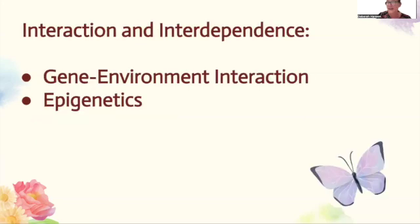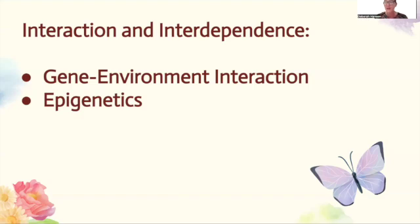The next slide covers interaction and interdependence — how nature and nurture don't just operate in isolation but interact in dynamic ways. First is gene-environment interaction: our genes and environments influence each other. For instance, a genetic predisposition to depression could be triggered by a stressful life event, or lessened by supportive relationships. Second is epigenetics — this field studies how environmental factors like diet and stress can affect gene expression without changing the DNA sequence. These changes can impact our behavior and mental processes, and it will come up as a key term on the exam.